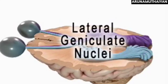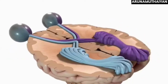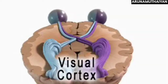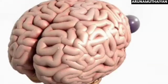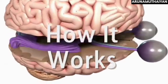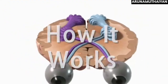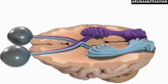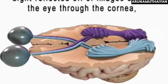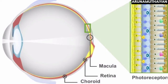We have two photoreceptors — rod and cone. The rod is rod-shaped and the cone is cone-shaped. The retina of each eye contains about 6 million cones and 120 million rods.